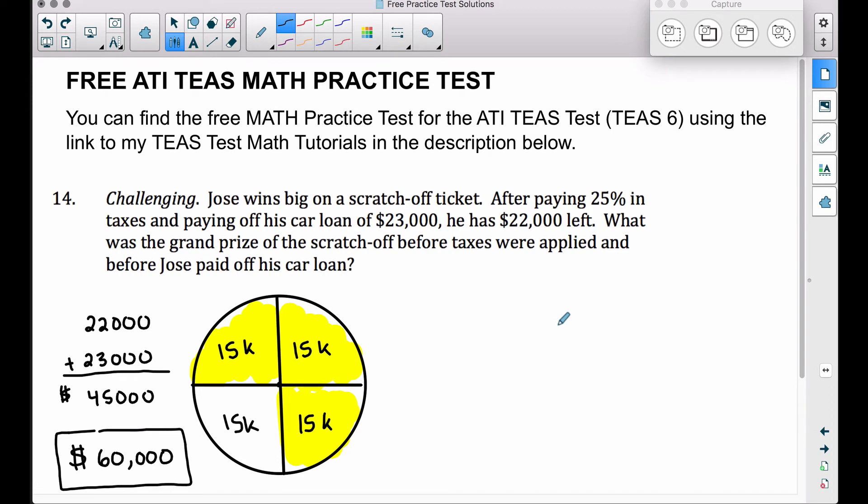We know he had $22,000 left plus the $23,000 that he paid off on his car. So this was at $45,000 plus 25% of his winnings went to taxes. A way we can do that is 25% of his winnings, X, that's what we don't know. But if we take the money he had left, we add back on what he paid his car off with plus a 25% tax, that's going to be the total amount of money he won.